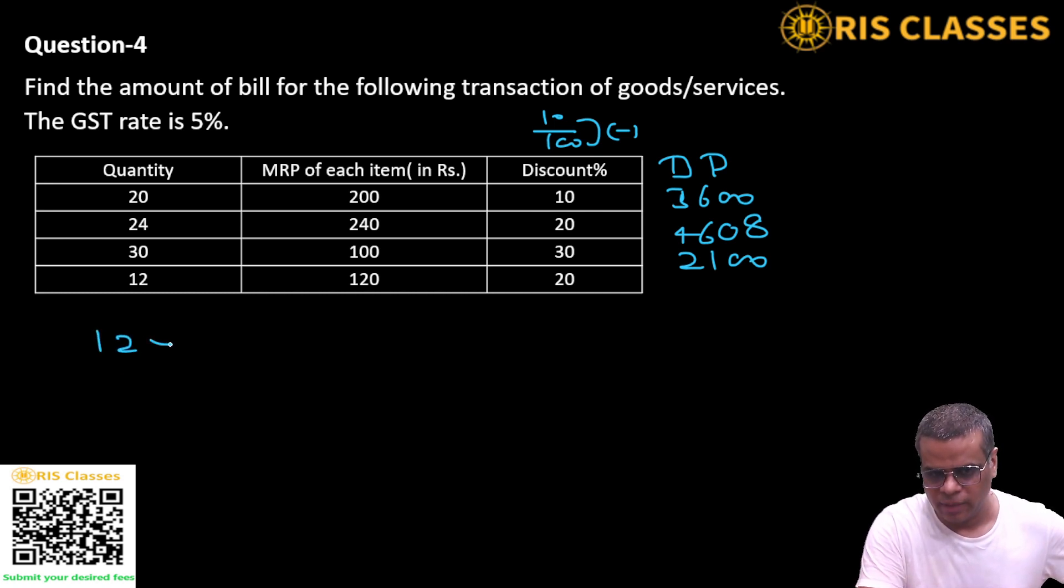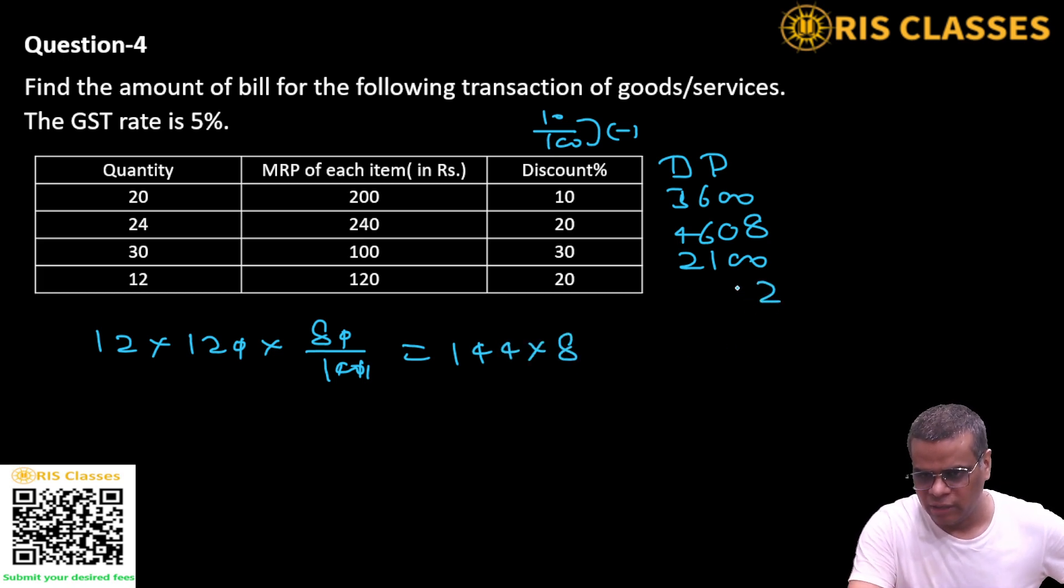Number of items 12, price of each item is 120, 20% discount. 80 by 100, so 100 minus 20 is 80 by 100. Two zeros cancel. 12 into 12 is 144, into 8... 32, carry 3... 1152. Now total discounted amount will be... 8 and 2, 10 carry 1, 5 and 1 is 6... 12 and 1 is 13, and 1 is 14... 7 and 2 is 9, and 1 is 10, and 1 is 11.